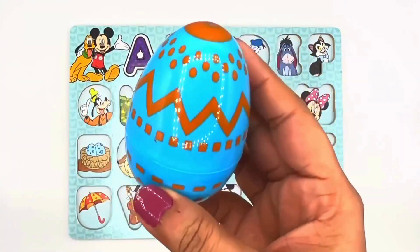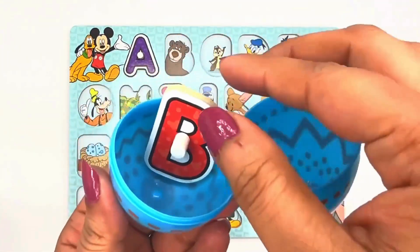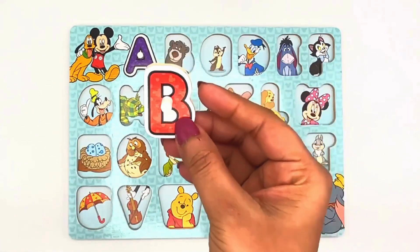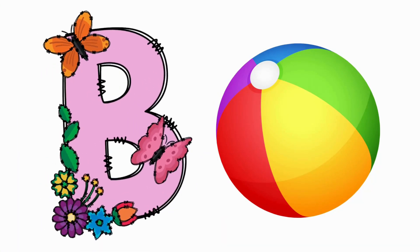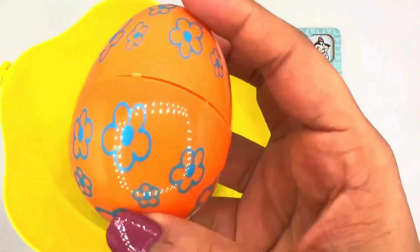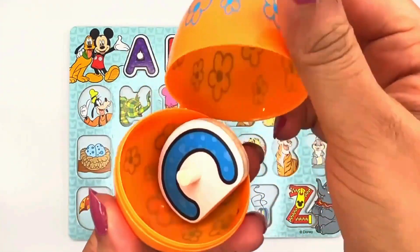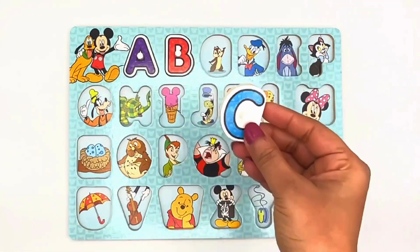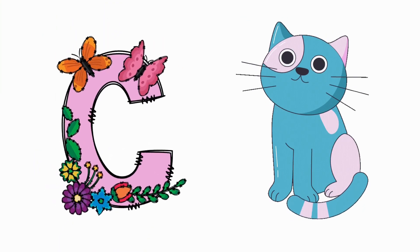Okay, let's pick the blue egg. Let's open it. Wow, I see the letter B. B for ball. Let's see what's in this orange egg. Let's open it. Yes, we see the letter C. C for cat. Meow.